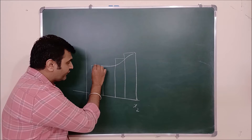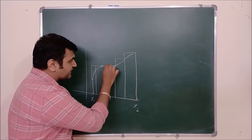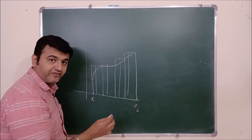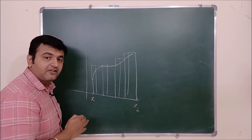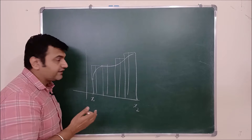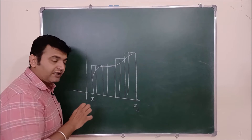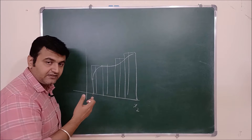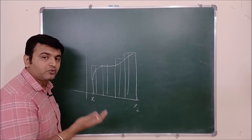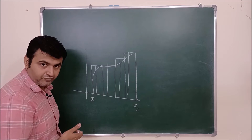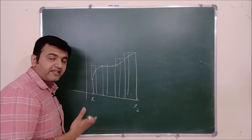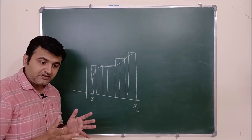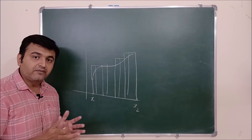What Riemann said is: you further do the partition. You increase the number of rectangles, and then one can observe that the sum of the areas of the rectangles is almost equal to the area under the curve. When you increase the number of rectangles, the approximation becomes more and more good.